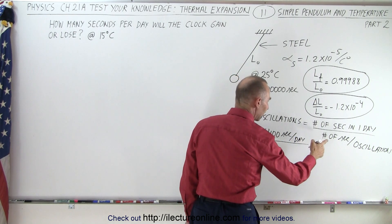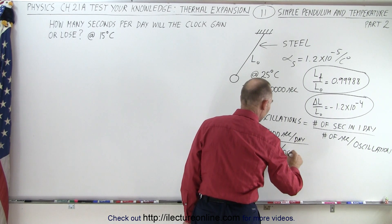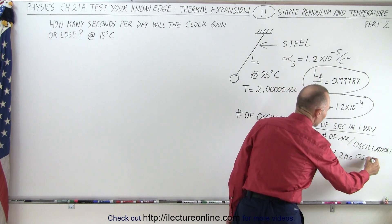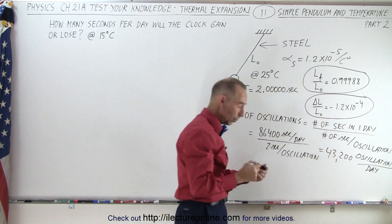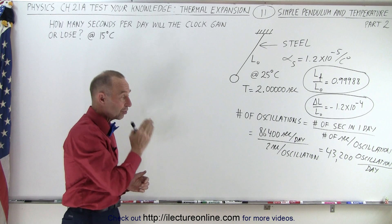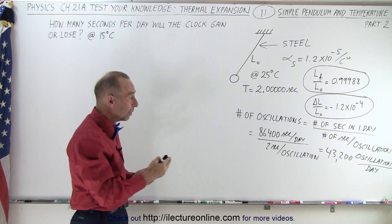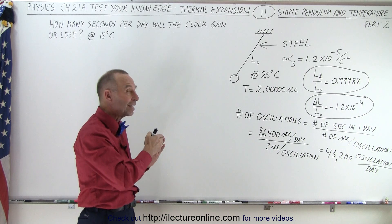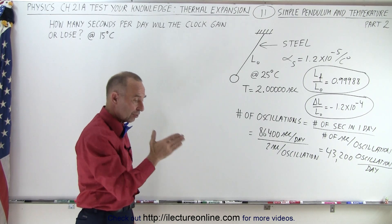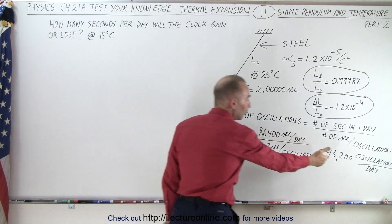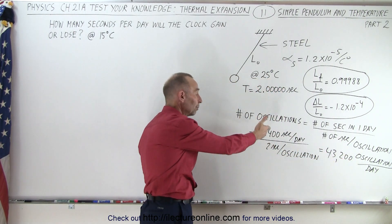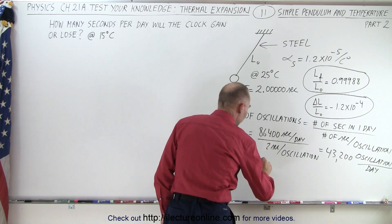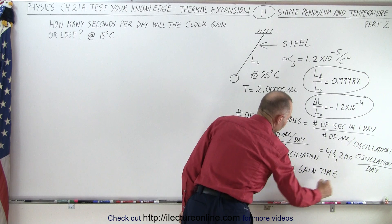Dividing 86,400 seconds by 2 seconds per oscillation gives us 43,200 oscillations per day. Now when the pendulum begins to swing faster, it will take less time to complete 43,200 oscillations. This means the clock will run faster — it will gain time due to the faster oscillations.